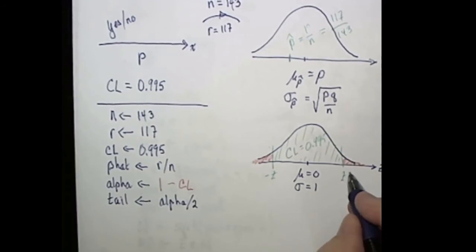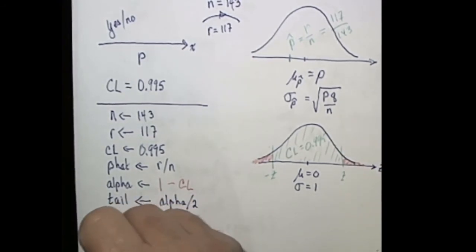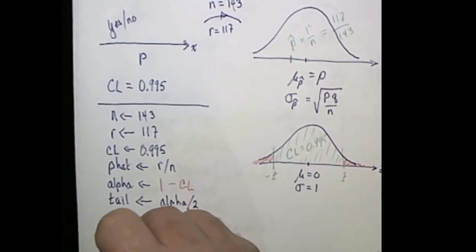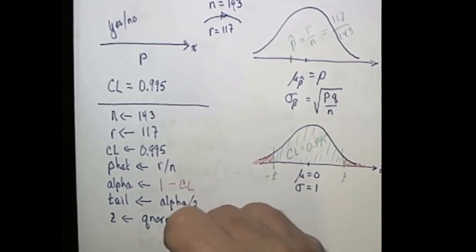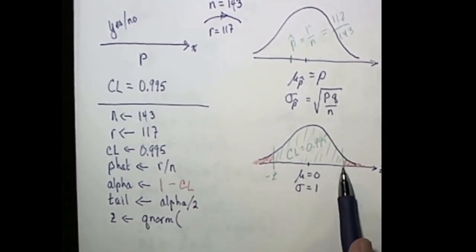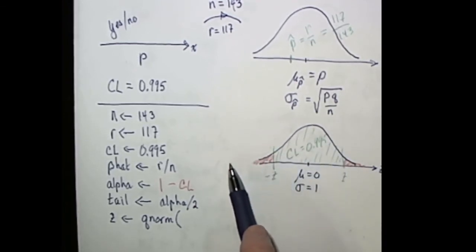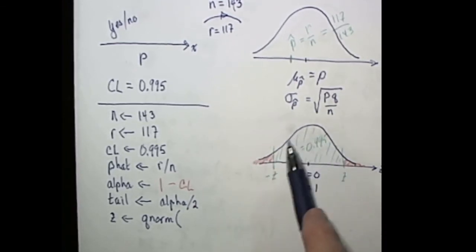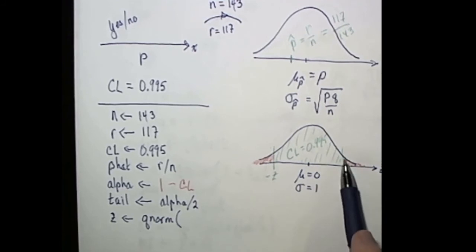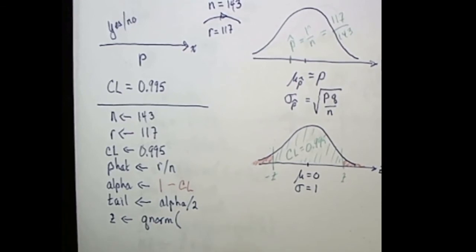So to find z, we will need to use a q function. So z is going to be q of something. Since this is a normal distribution, it will be a q-norm, and what we need to give to q-norm is the area below the z value that we're looking for. So we need to find this area. That's the confidence level plus one tail. It's one, the total area under the curve, minus a tail. There's those two different ways of calculating it.